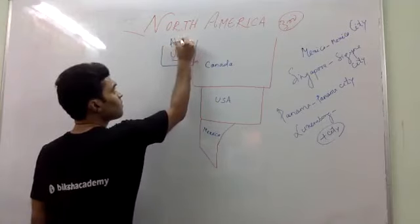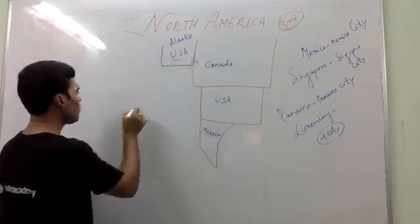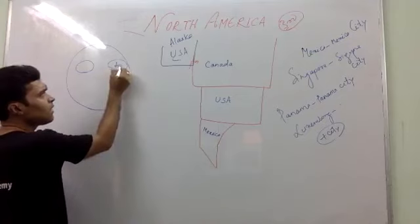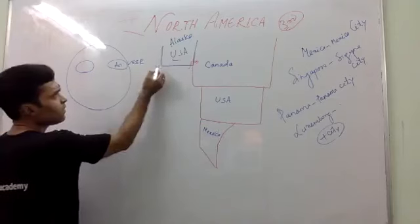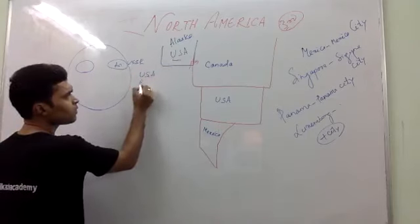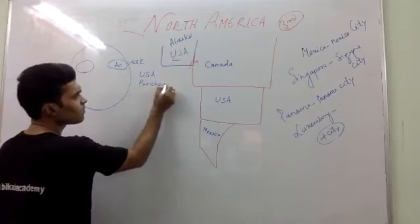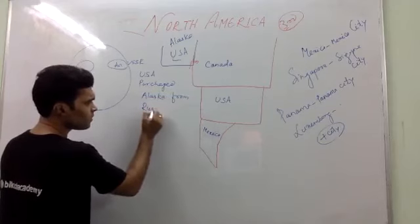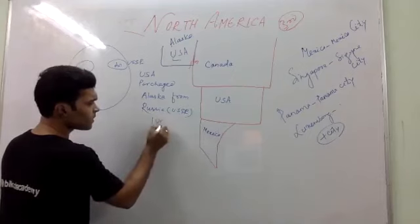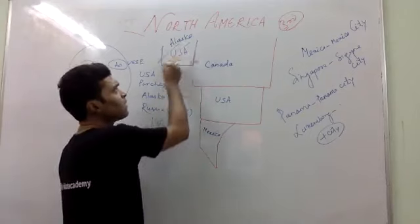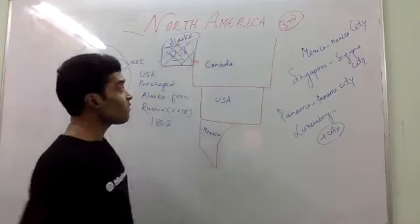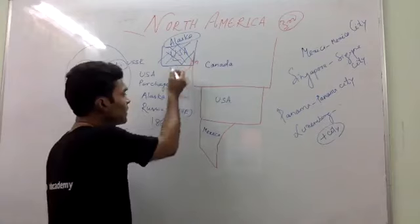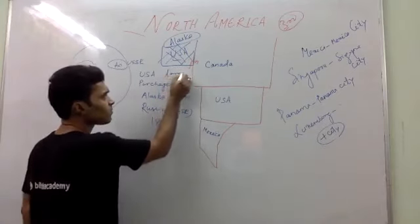This one is called Alaska. If you look at the globe, you will find North America here and Asia — Russia, the former USSR — is here. USA purchased Alaska from Russia in 1867. That is why this landmass is known as USA, and it is the largest state of USA. Alaska is the largest state.